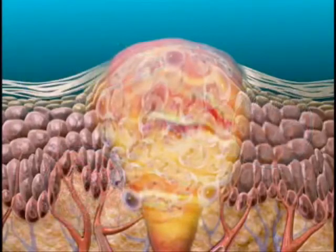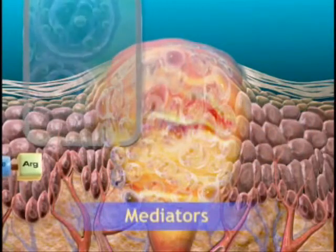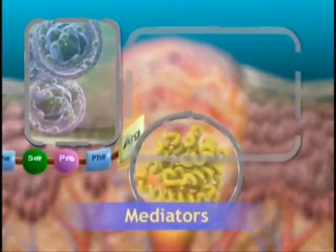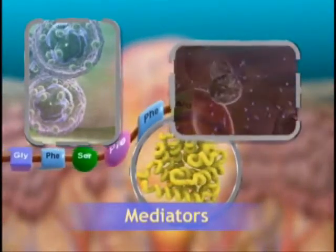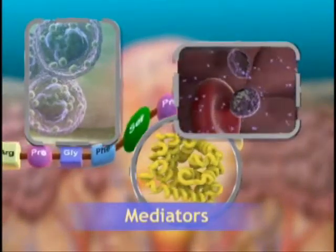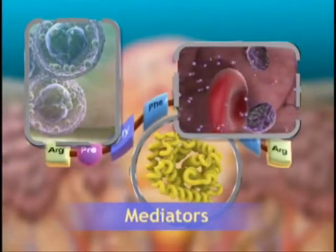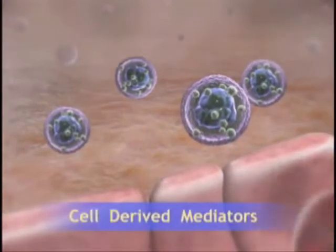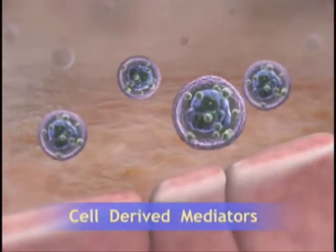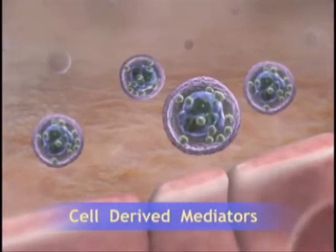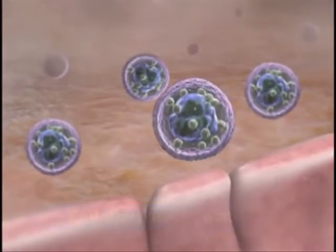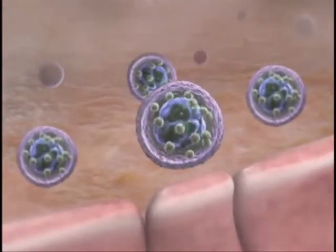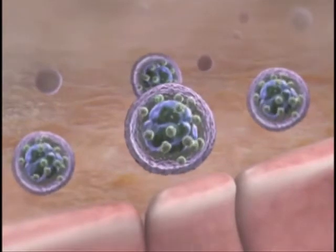Concurrent with the events of the vascular and cellular stages, chemical mediators release bioactive agents that act to mediate the inflammatory response. Mediators are derived from cells or from plasma. One of the first mediators of an inflammatory response is a cell-derived mediator, histamine, found in high concentrations in the mast cells of connective tissues adjacent to blood vessels, as well as in blood basophils and platelets.